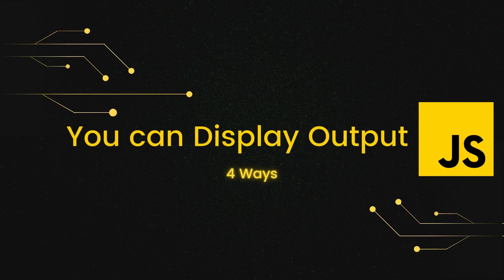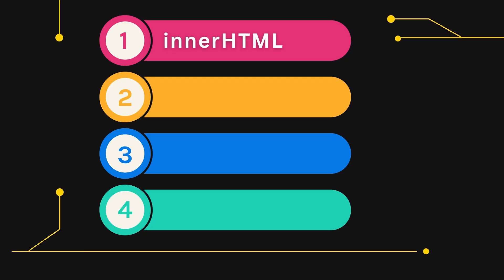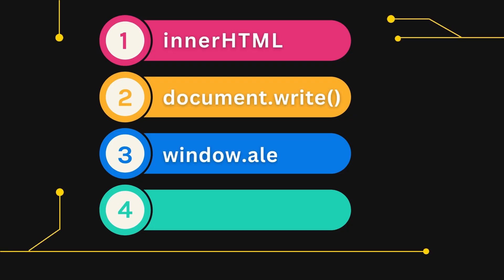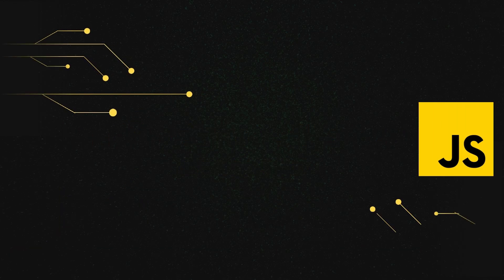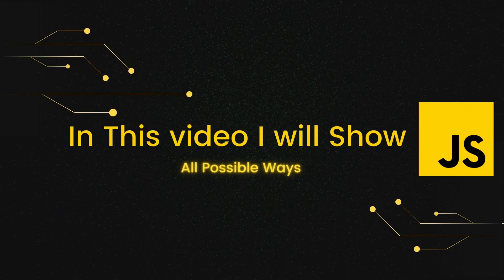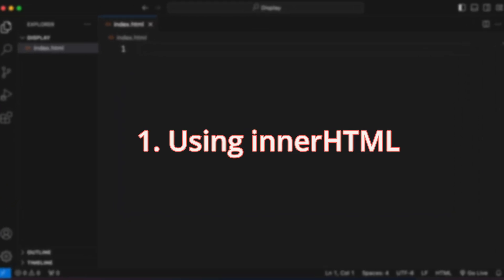You can display output in JavaScript in four ways: using innerHTML, using document.write, using window.alert, and using console.log. In this video I will show you all possible ways to display data in JavaScript.